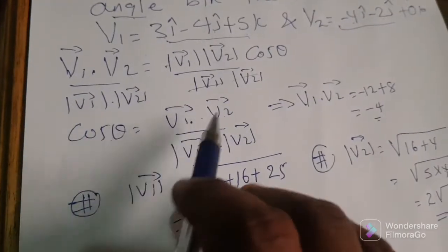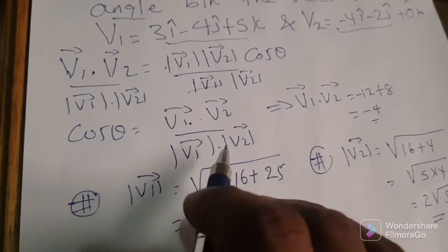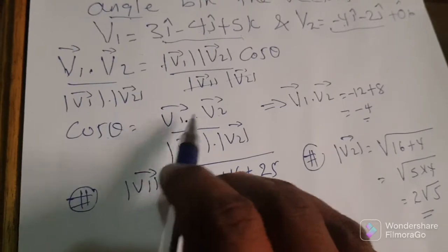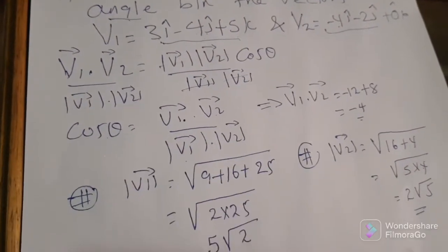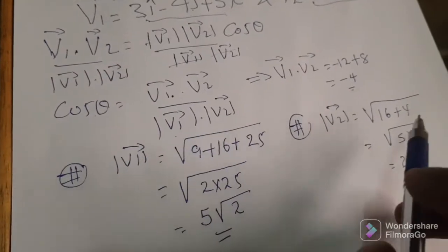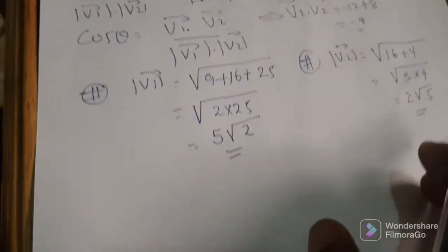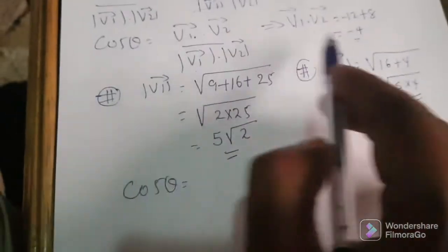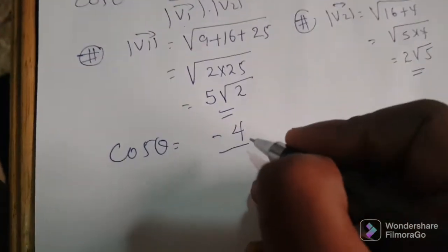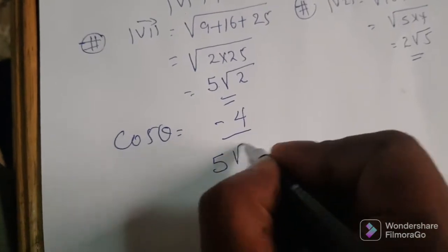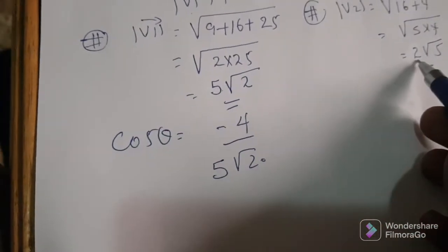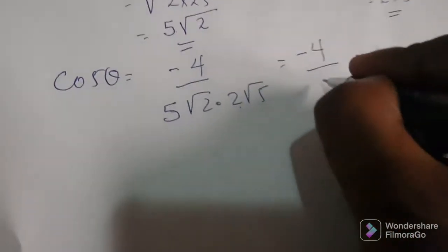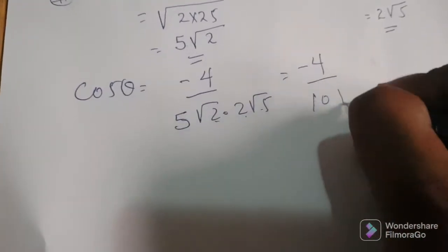The dot product of the two vectors divided by the multiplication of their norms: V1 dot V2 over magnitude of V1 times magnitude of V2. The dot product is negative 4, norm of V1 is 5 radical 2, norm of V2 is 2 radical 5. So cos theta equals negative 4 over 5 times 2, which is 10, times radical 2 times radical 5, which is radical 10.